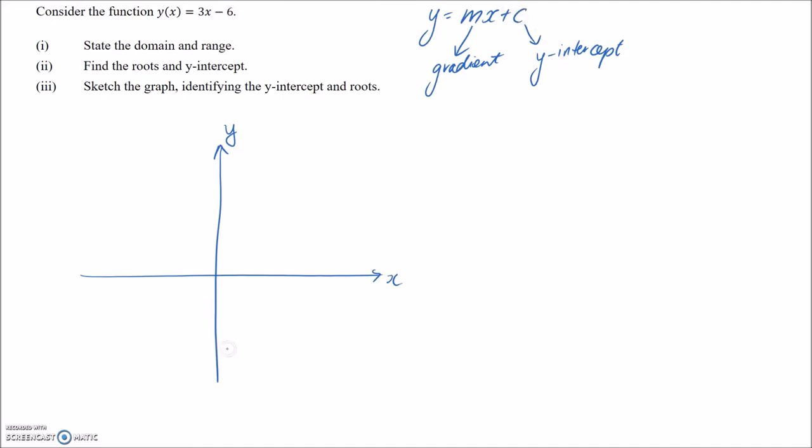Okay, so that means it's going to cross the y-axis somewhere down here. So if I sketch it, it's going to be a straight line. Let's use a different colour, straight up like this. All right, so from that we should be able to now describe our domain and range.